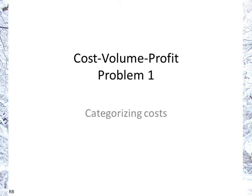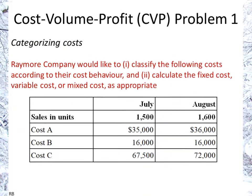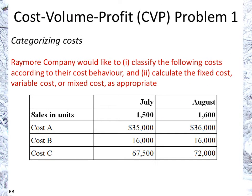Here we're going to be categorizing cost. Raymore Company would like to, first of all, classify the following costs according to their cost behavior, and two, calculate the fixed cost, variable cost, or mixed cost as appropriate. We have the values for two months, July and August. We have the sales in units: 1,500 and 1,600, and we have the costs of three different types: A, B, and C.